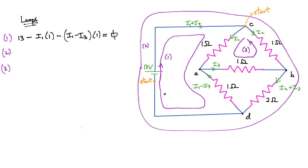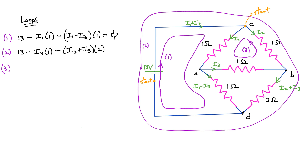Loop two is the outermost loop. Again the first thing I encounter is the battery, adding 13. The next thing I cross is a one-ohm resistor carrying current I2, giving a voltage drop of I2 × 1. Now at junction B, I cross the two-ohm resistor carrying current I2 + I3, giving a voltage drop of (I2 + I3) × 2. Back at the start, set equal to zero: 13 - I2 - (I2 + I3)(2) = 0.